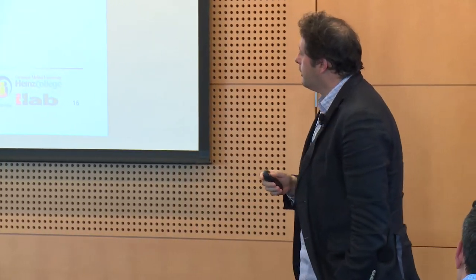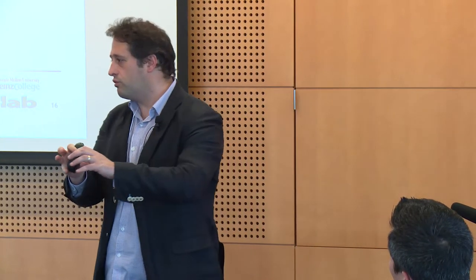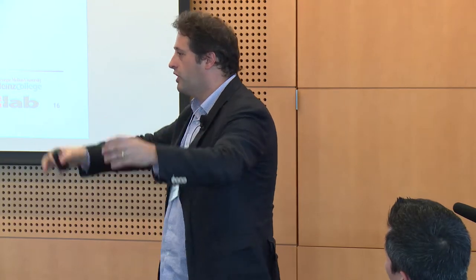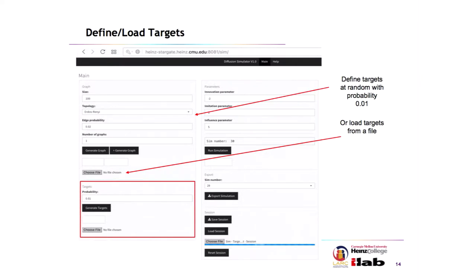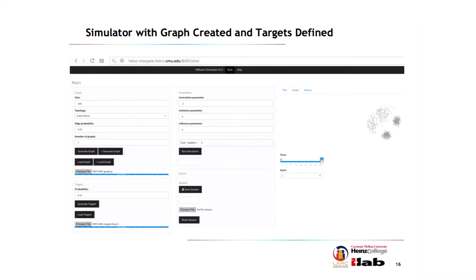To understand how diffusion occurs, once we have a graph, the next step is: who do we want to gift the product to begin with? We target the product to a few people and then see how it diffuses. I ask students: can you find a subset of initial targets — the initial condition — that will maximize diffusion? You can define targets at random or load targets from a file. Here I load targets from a file and the software shows these nodes endowed with the product at time zero. After setting a graph and targets, we run the simulation, which spreads the product from those targets according to some diffusion parameters.